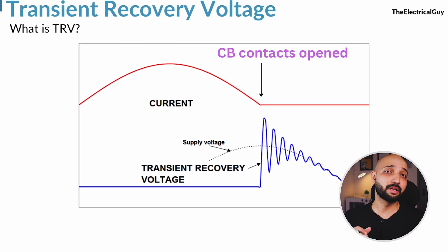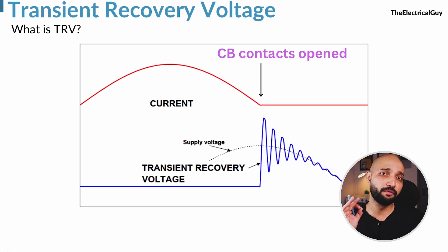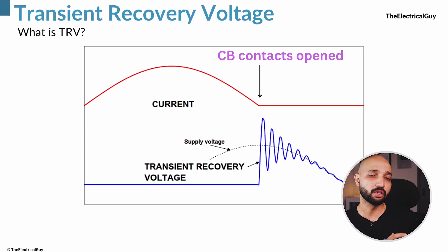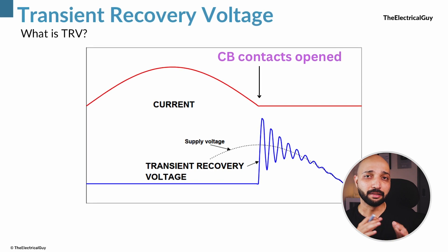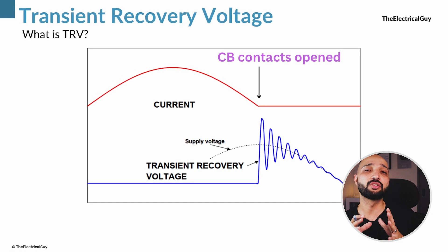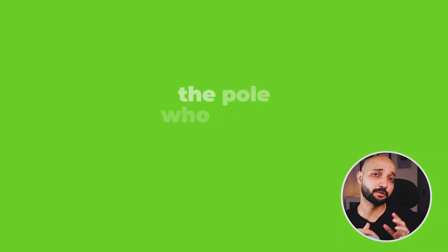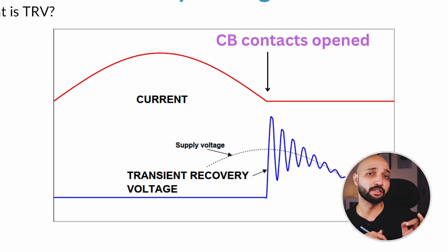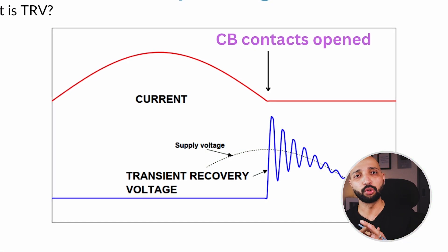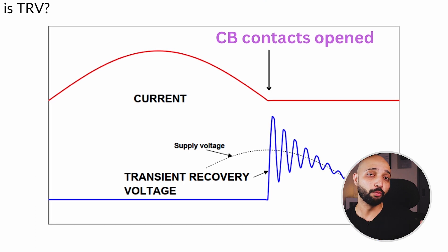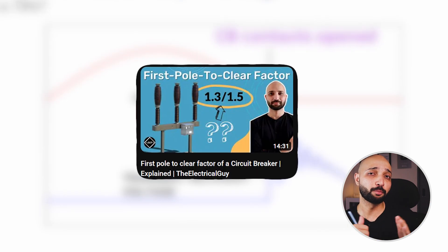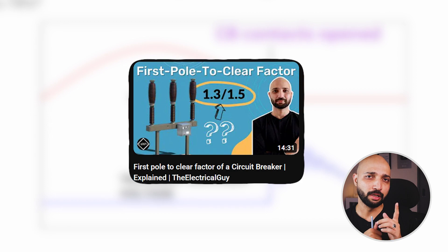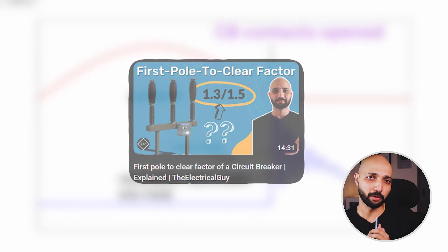Transient recovery voltage generally lasts for only a few microseconds, after which the normal frequency voltage is established. TRV is generally more severe across the first pole to clear the fault, which is known as the first pole to clear factor. To know more about the first pole to clear factor, you can watch the linked video provided in the description.